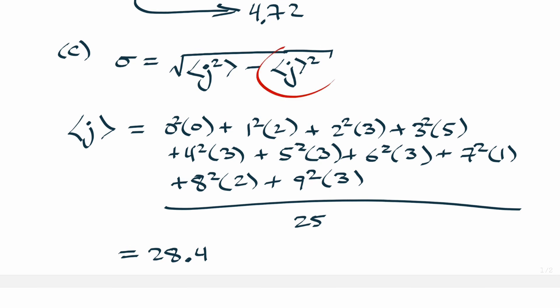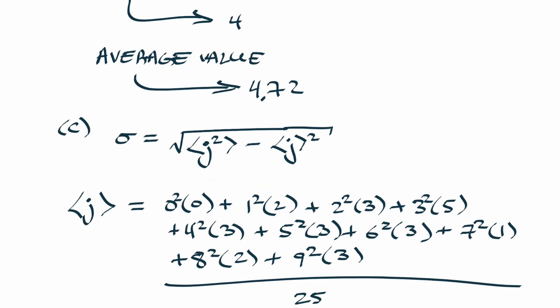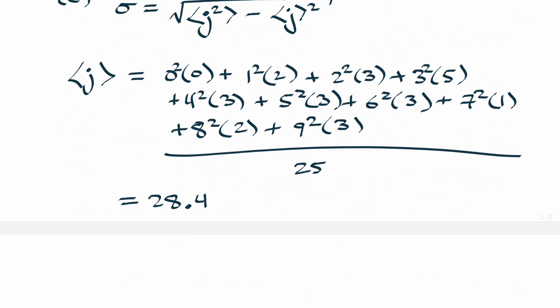What is this part then, expectation value of j quantity squared? Well that is actually just your average value but then we need to square it. So what this is saying then is that j is really equal to 4.72, so then if you want to square it, then there you go, 4.72 squared.